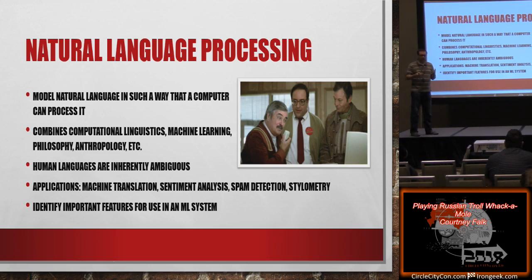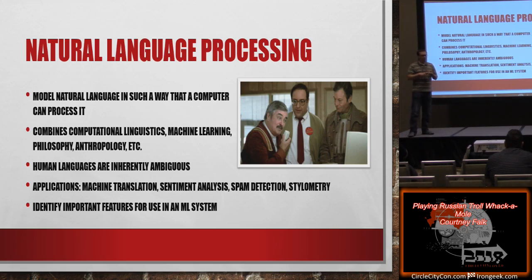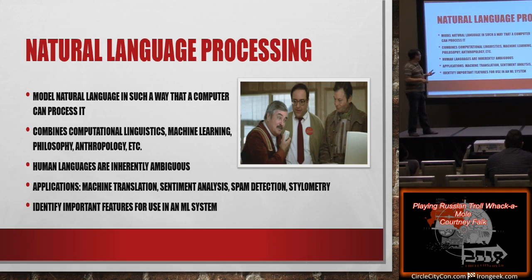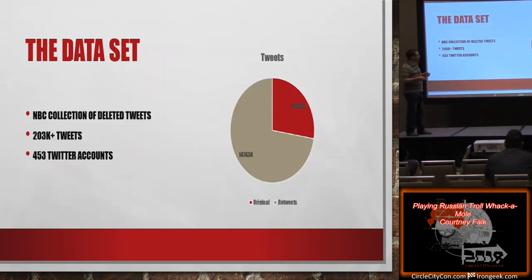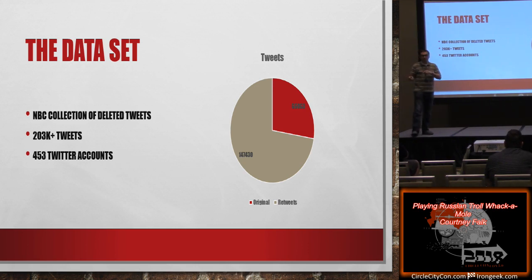Natural language processing sits in a Venn diagram with machine learning, both under artificial intelligence with some overlap. NLP builds on the social science aspects of linguistics, the computer science aspects of computational linguistics, and the math of machine learning. The problem is that human languages are inherently ambiguous — which is both the power and the difficulty — because ambiguity lets us express an infinity of different possibilities but makes languages really difficult to parse. We're going to apply machine learning to see if we can pick out trolls better than the current state of the art.